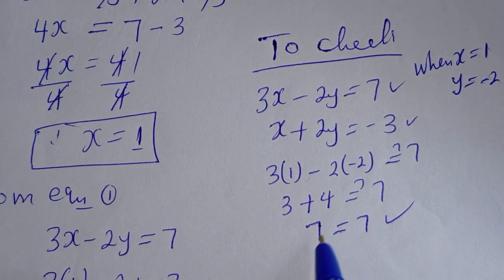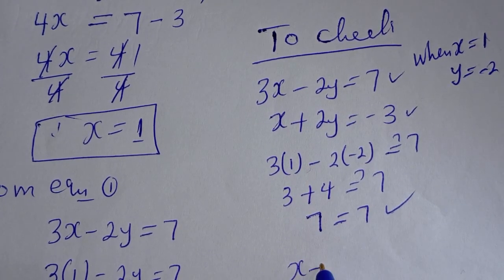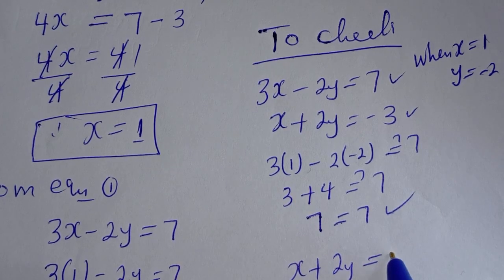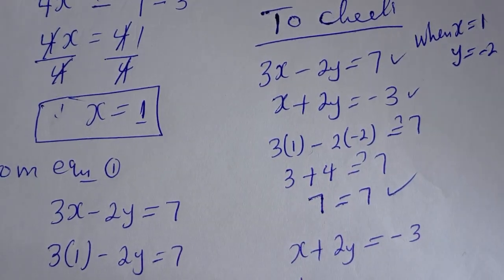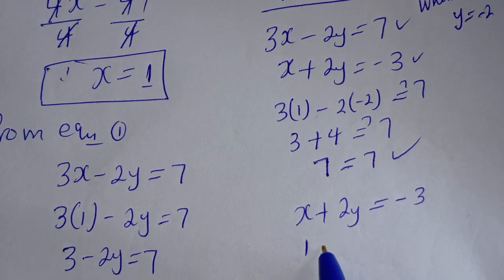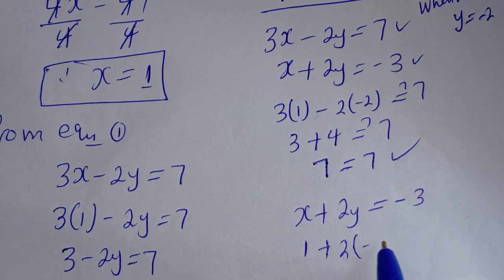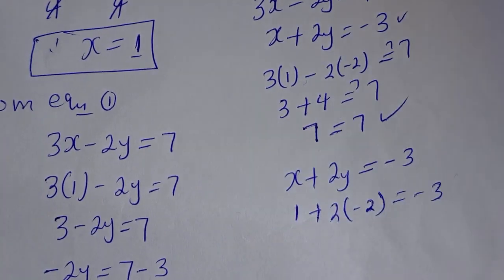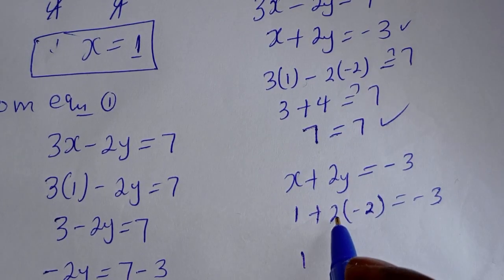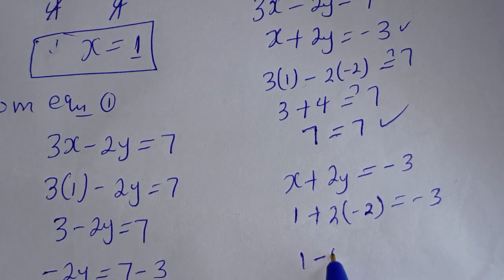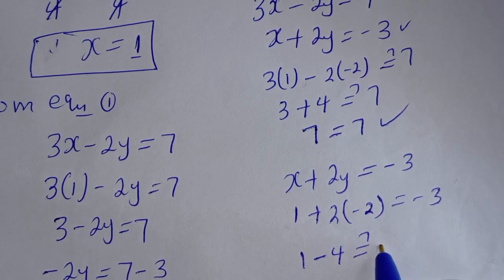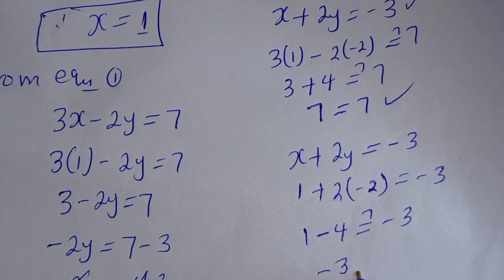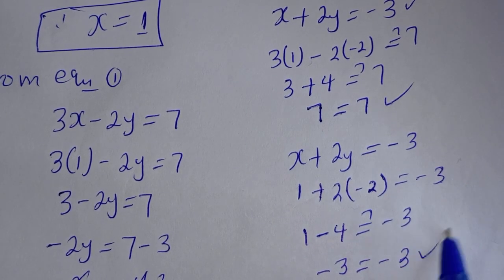Also, when x is 1 and y is minus 2: x plus 2y must equal minus 3. So 1 plus 2 bracket minus 2 is 1 minus 4, which is minus 3. This is equal to minus 3, which is also true. Both solutions are verified.